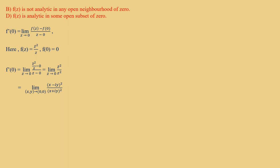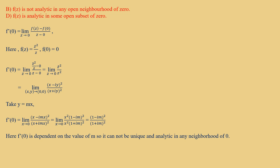This equals the limit as (x, y) → (0, 0) of (x − iy)² / (x + iy)². Taking y = mx, we get the limit as x → 0 of x²(1 − im)² / x²(1 + im)², which equals (1 − im)² / (1 + im)². Since this result depends on the value of m, the limit is not unique and F(z) cannot be analytic in any neighborhood of 0. Therefore Option B is true and Option D is false. Since we must find the false statement, Option D is the correct answer.